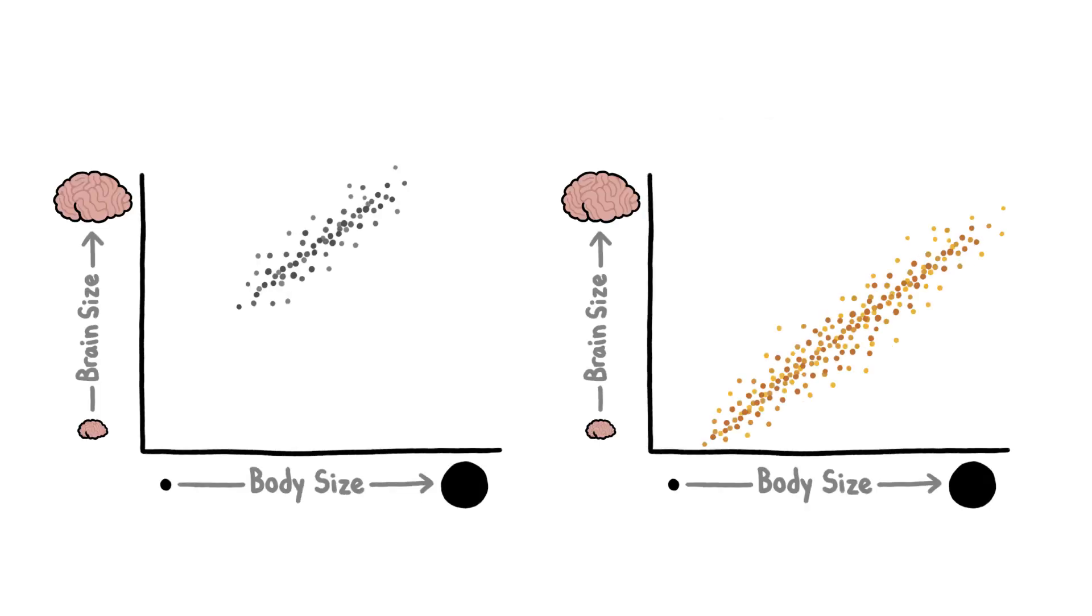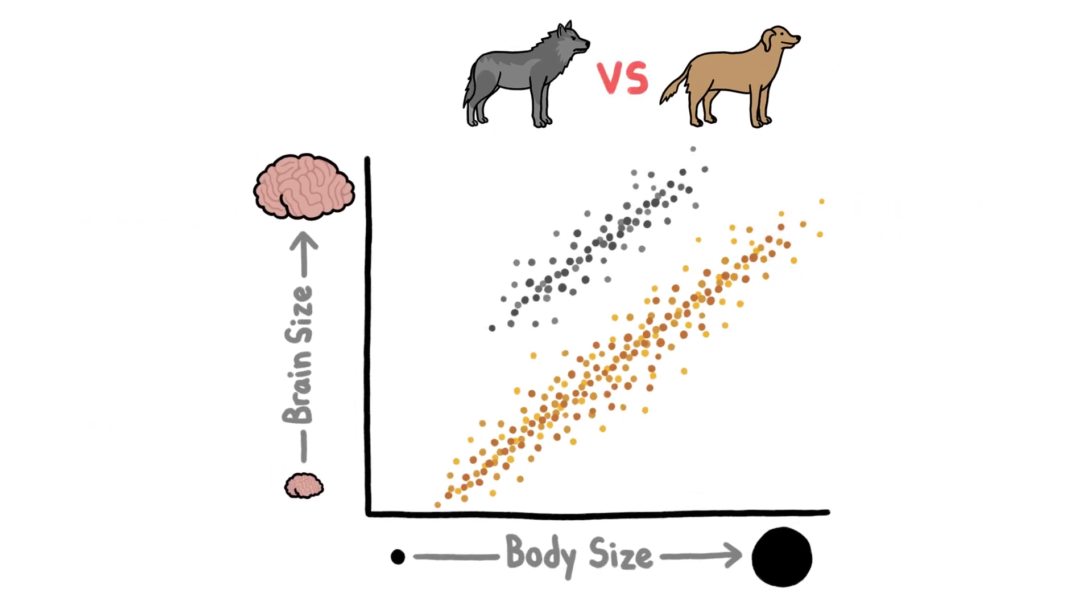The same relationship exists for individuals within species. So for example, small wolves have smaller brains than big wolves, and small dogs have smaller brains than big dogs. But when you compare wolves and dogs, between individuals of the same size, the wolves have bigger brains,